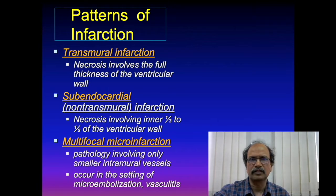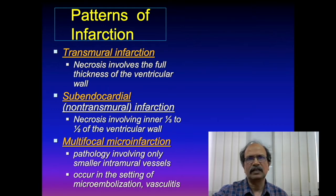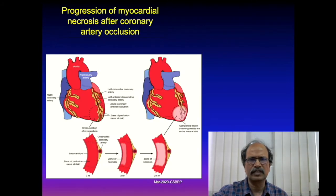Transmural infarction means the whole thickness of the ventricular wall is infarcted or dead. Subendocardial infarction refers to death of tissue in the inner half or inner one-third of the ventricular wall. Multifocal micro-infarction involves irregularly distributed small areas throughout the myocardium.